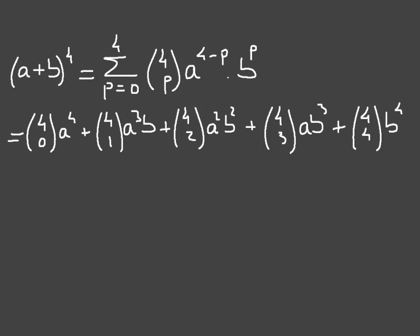If I go ahead and write down the values of each of these — I'll write this in purple just below — the first binomial coefficient is equal to 1, the second is equal to 4, the third is equal to 6, the fourth is equal to 4, and the last one is equal to 1.